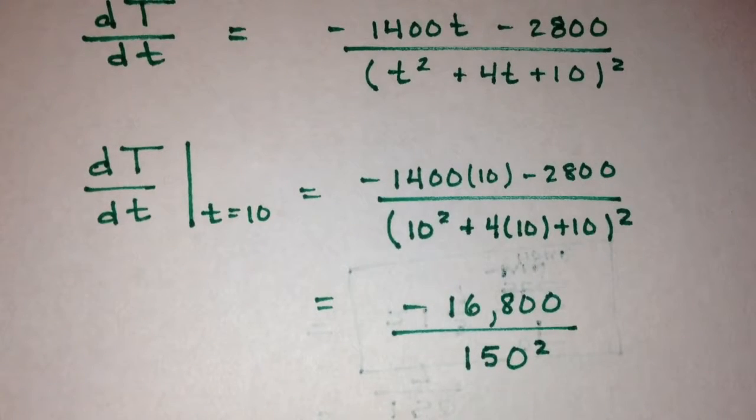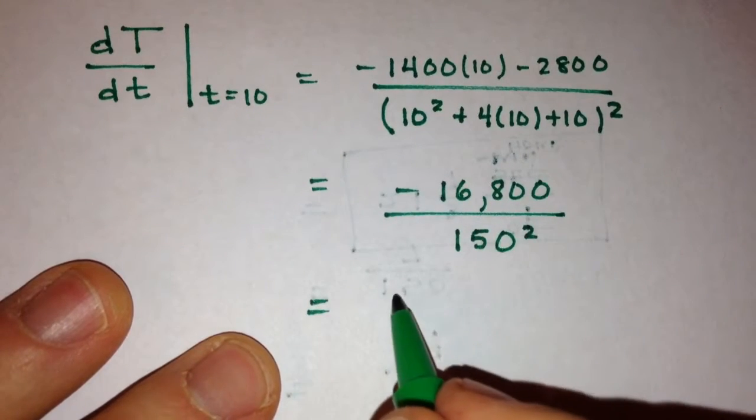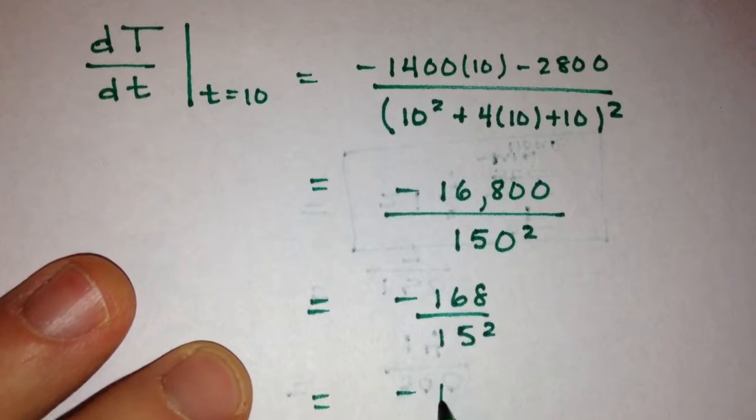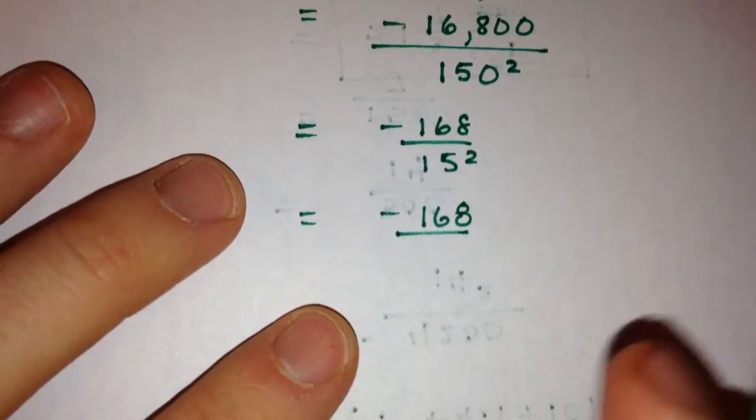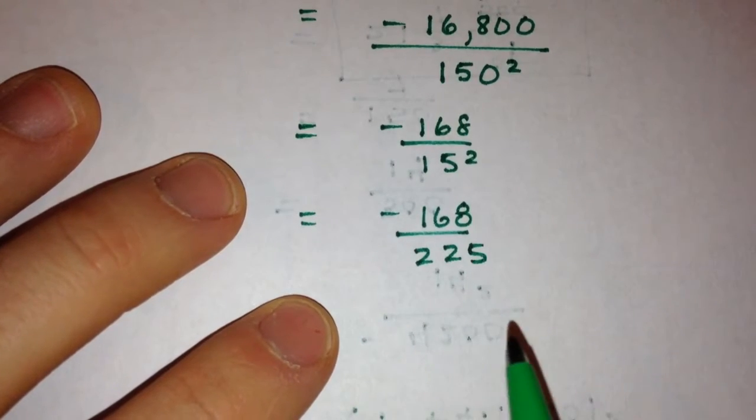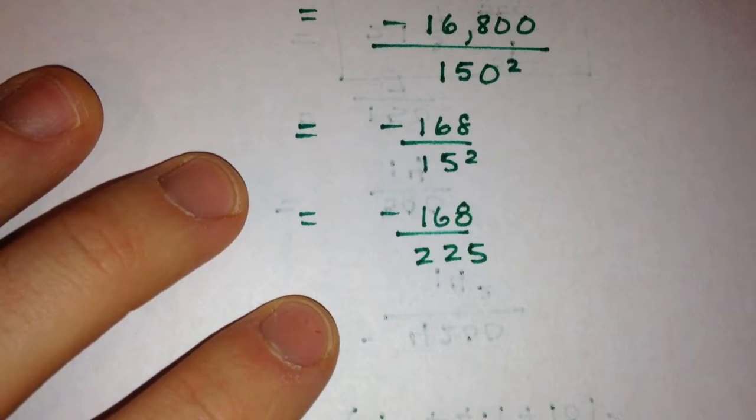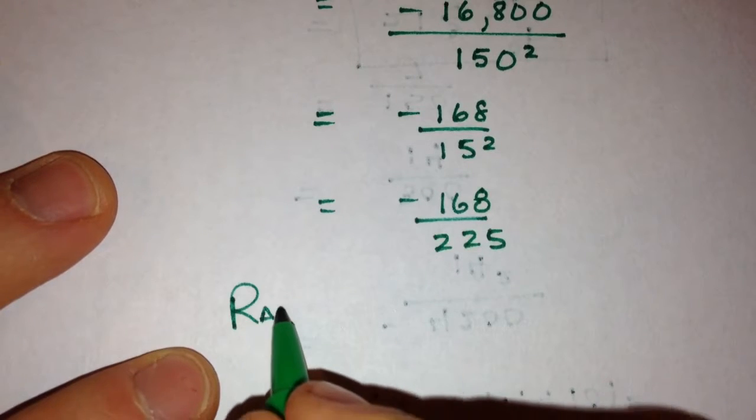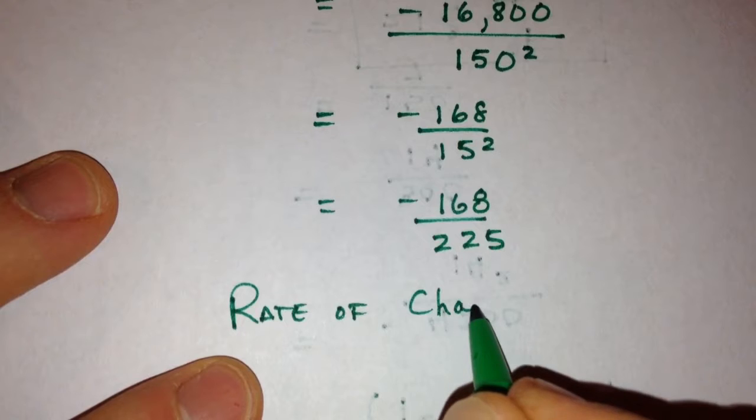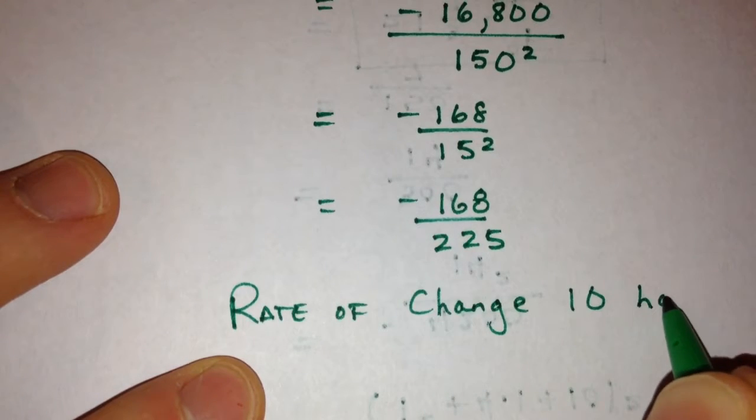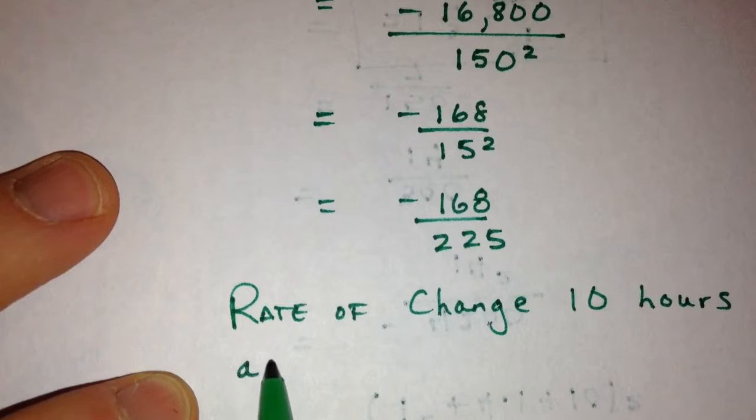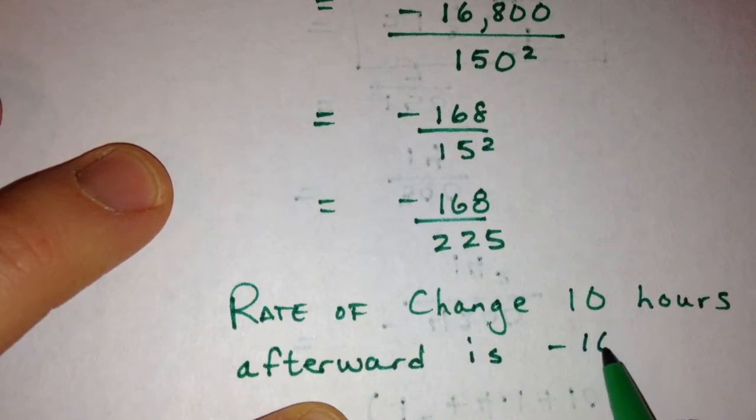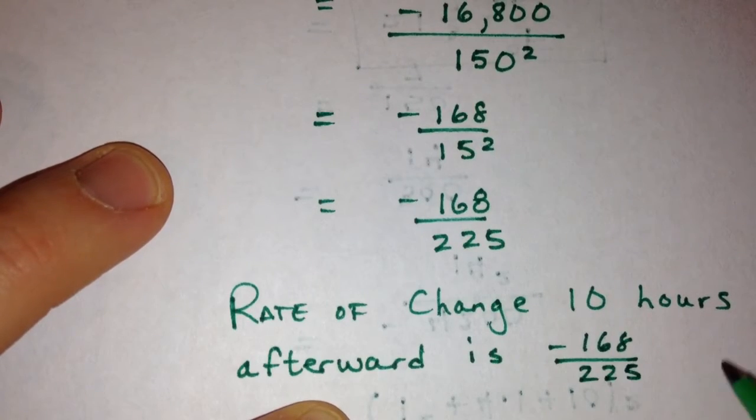Now, unfortunately, I don't know exactly what that number would come out to be. Let's see. We can drop the zeros. We can say it would be 168 over 15 squared, which is 168 over 225. So, less than one degree it is dropping by, but we could say here that the rate of change 10 hours afterward is negative 168 over 225.